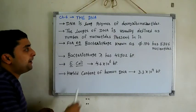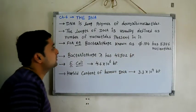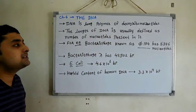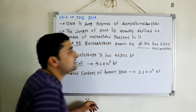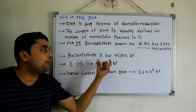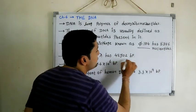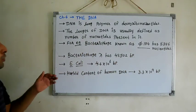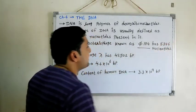For example, bacteriophage known as phi X 174 has 5,386 nucleotides, whereas bacteriophage lambda has 48,502 base pairs present.